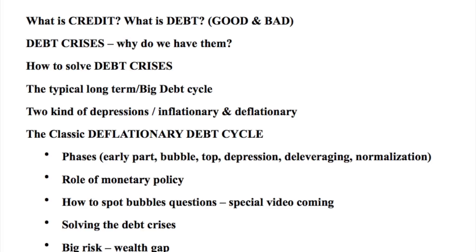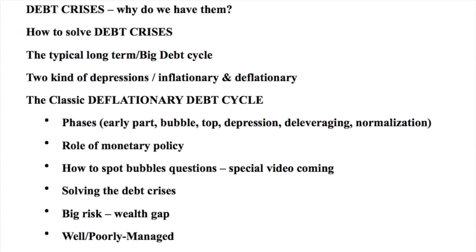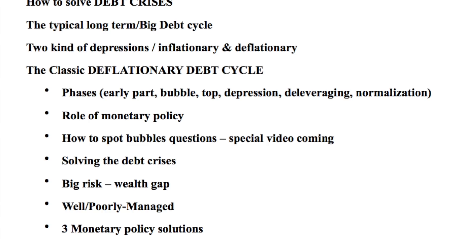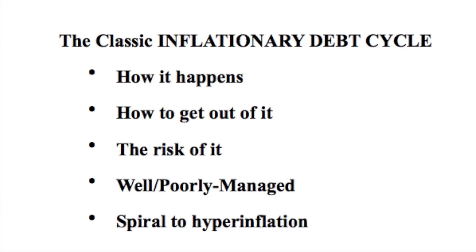So let's start with the book. This is what the book contains and what we'll discuss: what is credit, what is debt, how can it be good or bad, debt crises and why we have them, how do we solve debt crises, the typical long-term big debt cycle, the two kinds of depressions — inflationary and deflationary — the classic deflationary debt cycle, its phases, the role of monetary policy, how to spot bubbles, the big risk coming from the increase in the wealth gap, well- and poorly-managed crises, monetary policy solutions, and then the classic inflationary debt cycle — how it happens, how to get out of it, and how it can lead to hyperinflation.